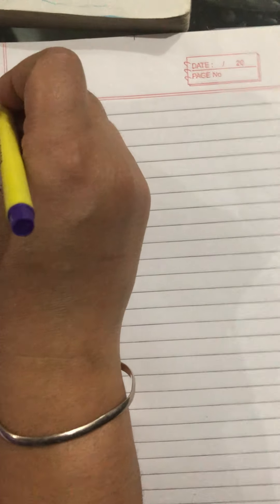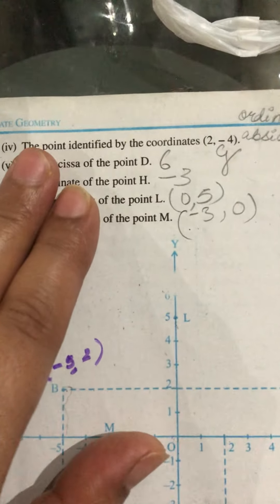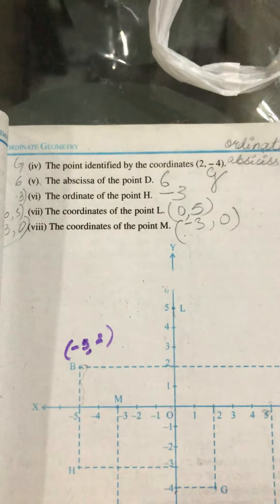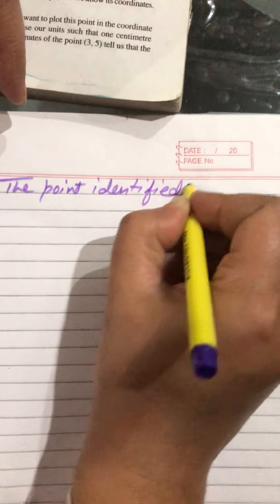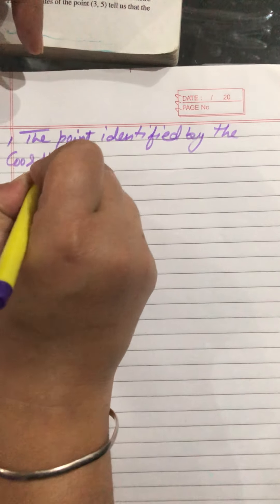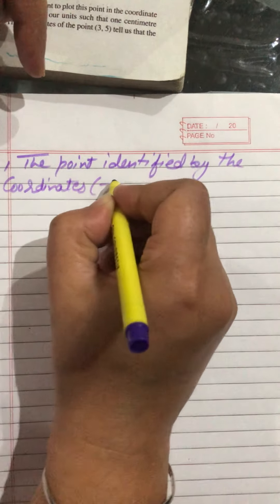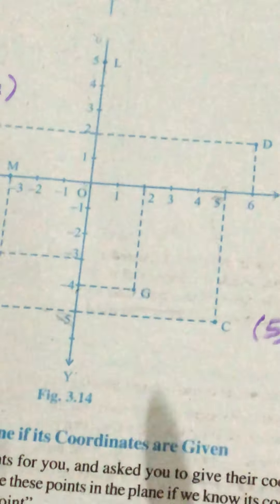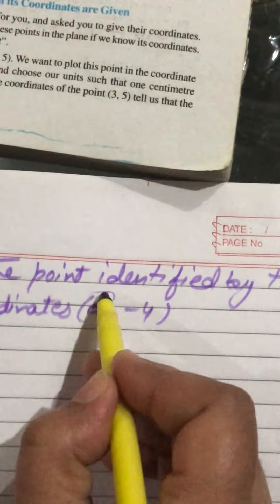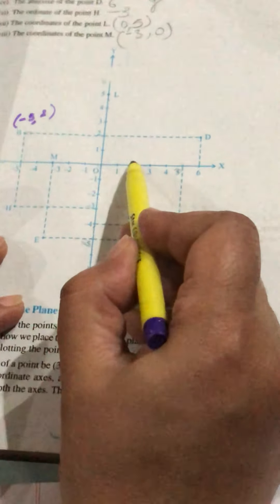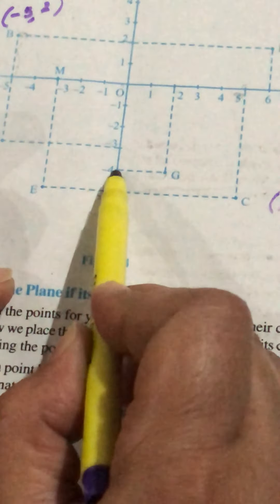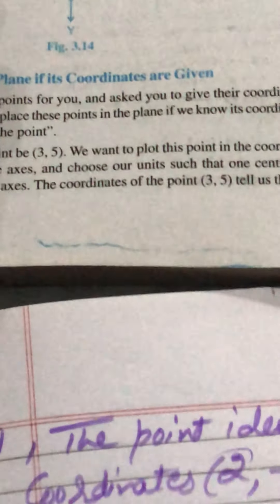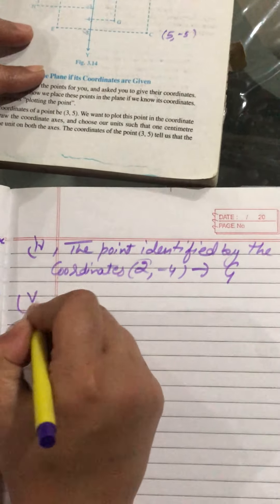The fourth part: the point identified by the coordinates (2, −4). You can see x is 2 and y is minus 4. X equals 2 is here and y equals minus 4 is here. Both lines meet at point G. So the answer is G.